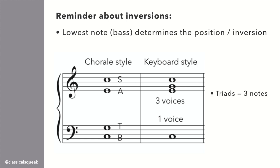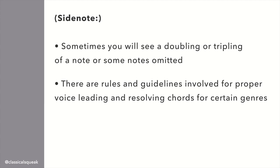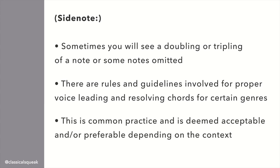There is also keyboard style with three voices in the treble and one in the bass. A triad only has three voices, which means that generally one note needs to be doubled for it to be four voices. Sometimes you'll see a doubling of a note or even a note omitted and another one tripled for a 7th chord. There are rules and guidelines involved for proper voice leading and resolving chords. So as you're advancing in your studies when you're looking at more exercises, just know that this is common practice and is deemed acceptable and or preferable depending on the context of the chords.